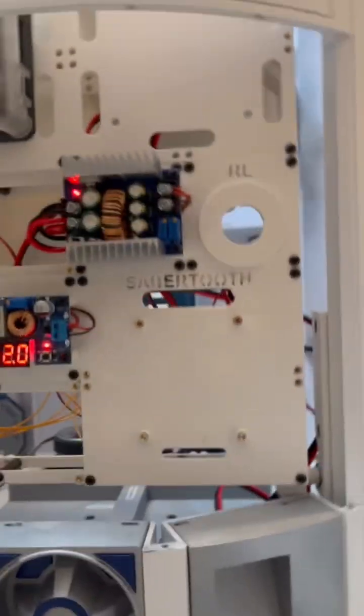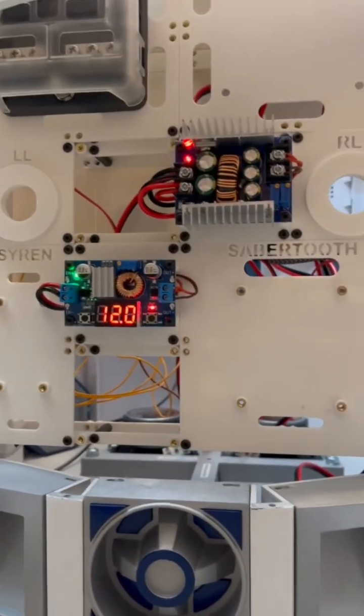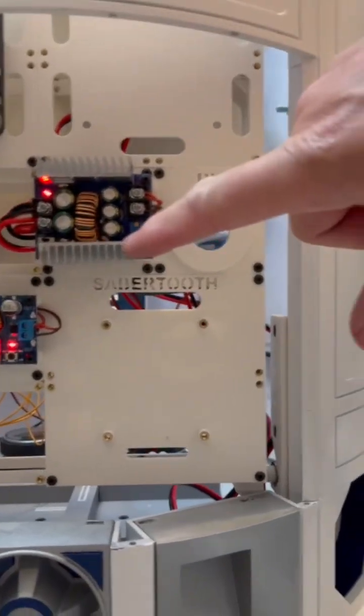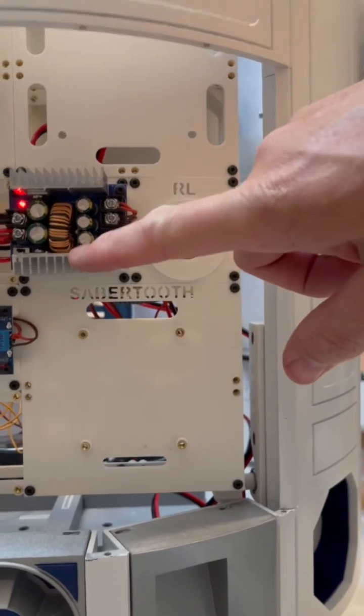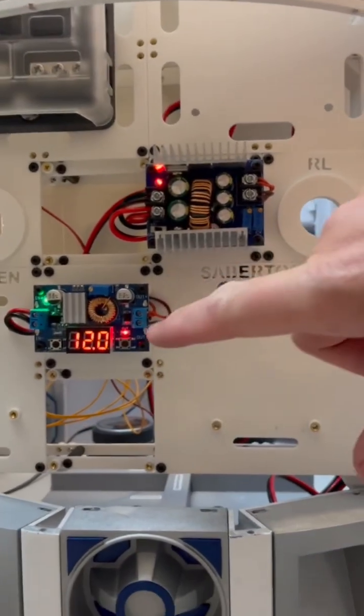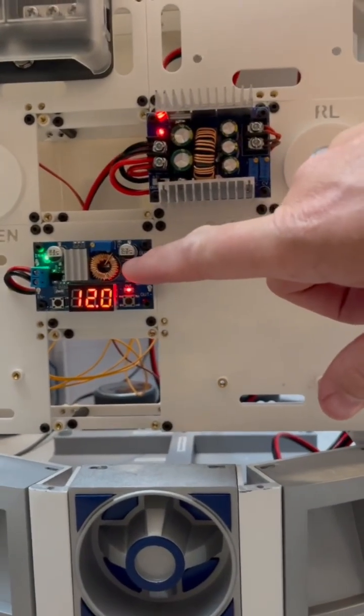So I've got 18 volts going into R2, and right now I have the 18 volts converting down to 5 volts on this buck converter, and then 12 volts on this buck converter.